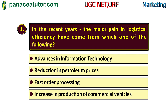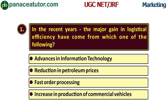Now we will discuss the question from December 2019. Question 1: In recent years, the major gains in logistical efficiency have come from which of the following? Options: advances in information technology, deduction in petroleum prices, faster order processing, increase in production of commercial vehicles. The answer is advances in information technology.